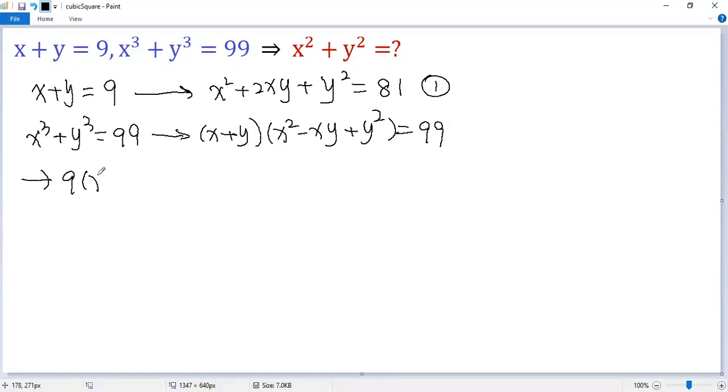So we get 9 times x squared minus xy plus y squared equals 99. Both sides divided by 9, so we get x squared minus xy plus y squared equals 11.